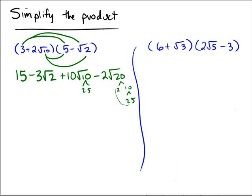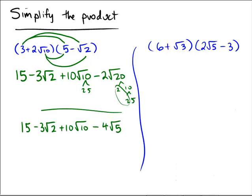We do have a pair of 2s that are going to escape from the radical. So the final answer is 15 minus 3√2 plus 10√10 minus 4√5, as I allow those 2s to escape and combine with the other 2.